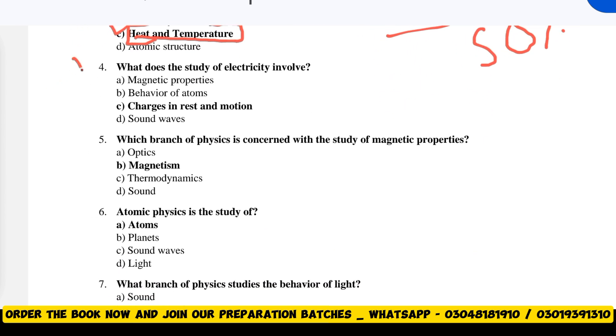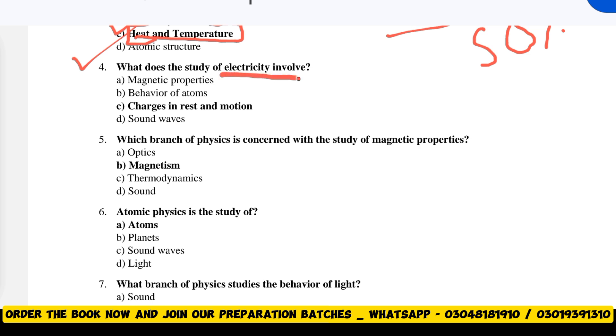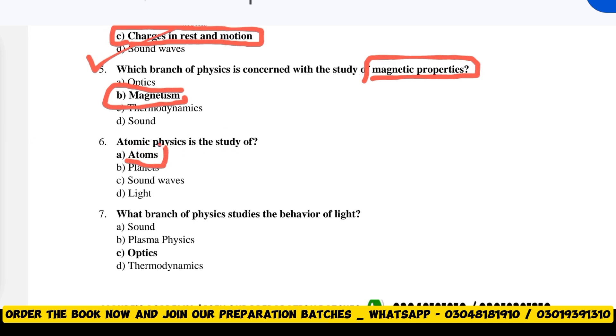I will give you 50% discount on the course. Our course fees are otherwise very high. Lectures are being made and many batch students are listening to these lectures. It's well and good. Your lectures have been prepared and now they are in the editing process. Question number four: What does the study of electricity involve? Charges in rest and motion. Question five: Which branch of physics is concerned with the study of magnetic properties? Magnetism.